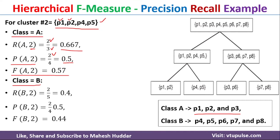For class B in cluster 2: class B has 5 objects, and out of those, only P4 and P5 are present in this cluster, so the numerator is 2, divided by 5 (objects in class B), giving recall of B2 equal to 0.4. Precision of B2 equals 2 divided by 4 (objects in cluster 2), which equals 0.5. Using these two values, the F-measure of B2 equals 0.44.